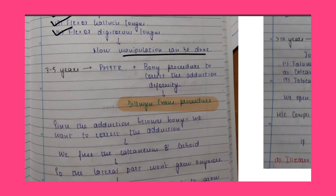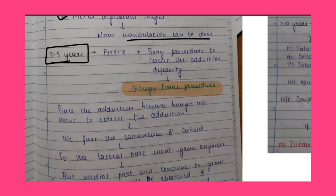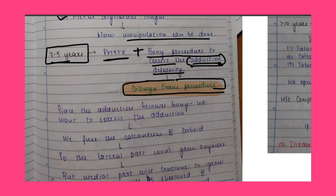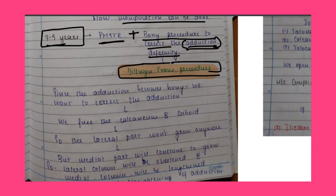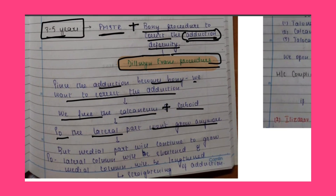If the age of presentation is 3 to 5 years, we perform posteromedial soft tissue release plus a bony procedure to correct the adduction deformity. This bony procedure is known as the Dillwyn Evans procedure. Since adduction becomes bony, we fuse the calcaneum and cuboid. The lateral part of the foot stops growing while the medial part continues to grow, so the lateral column is shortened and medial column is lengthened, leading to straightening of the adduction.